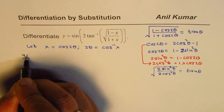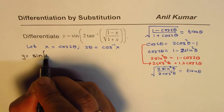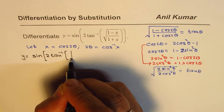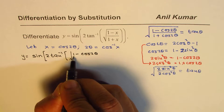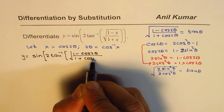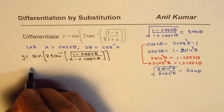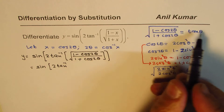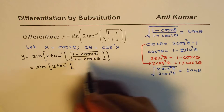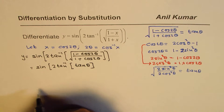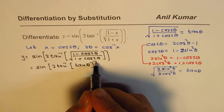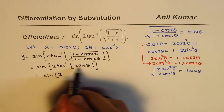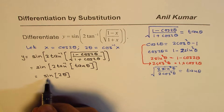We have y equals sine of 2 tan inverse of the square root of 1 minus cos 2 theta divided by 1 plus cos 2 theta. This could be written as sine of 2 tan inverse — and this thing I just proved equals tan theta — so we write this as tan theta. Now, tan inverse of tan theta equals theta, so what we get here is sine of 2 times theta, giving us sine 2 theta.